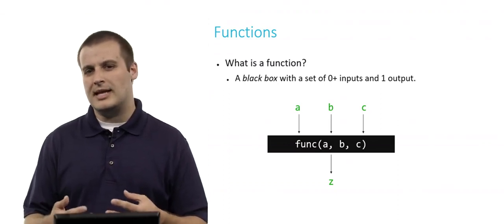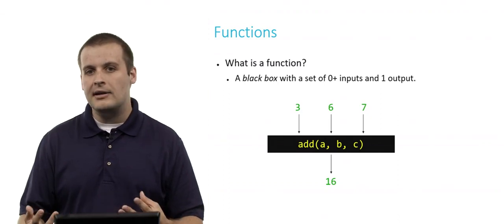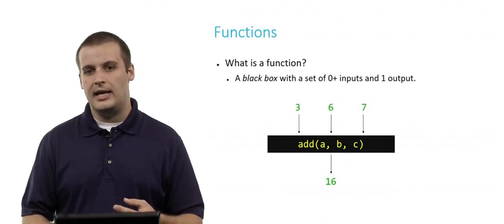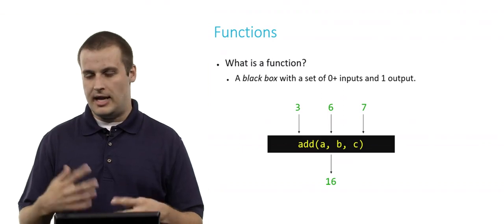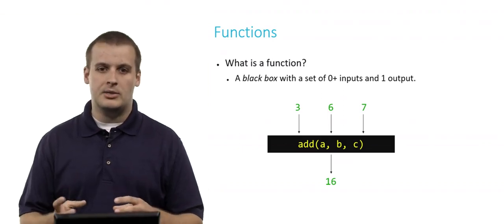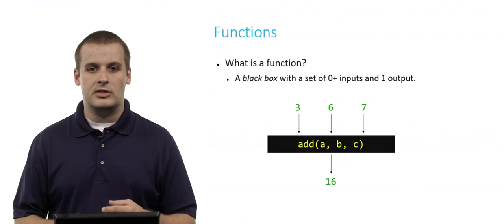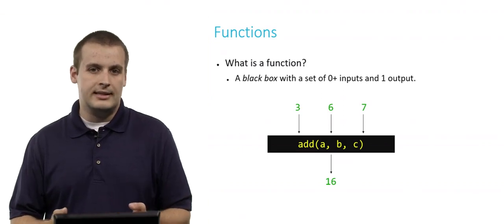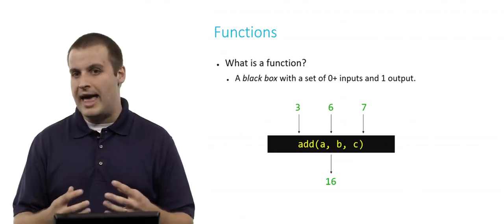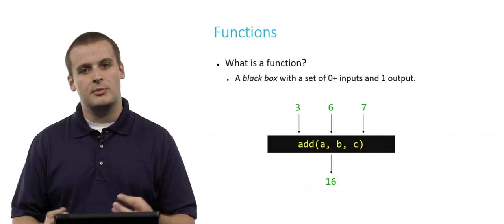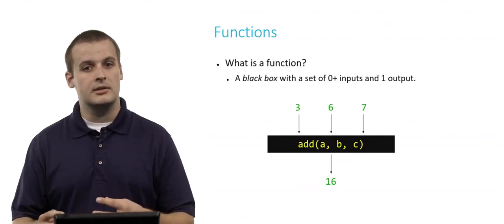Now to make it a little less abstract, we could say that maybe we have a function called add that takes three inputs, a, b, and c, and processes them inside the black box to produce a single output. So in this case, if add takes three, six, and seven, somewhere inside the add function we would expect them to be added together to produce the output, which is three plus six plus seven, or 16.